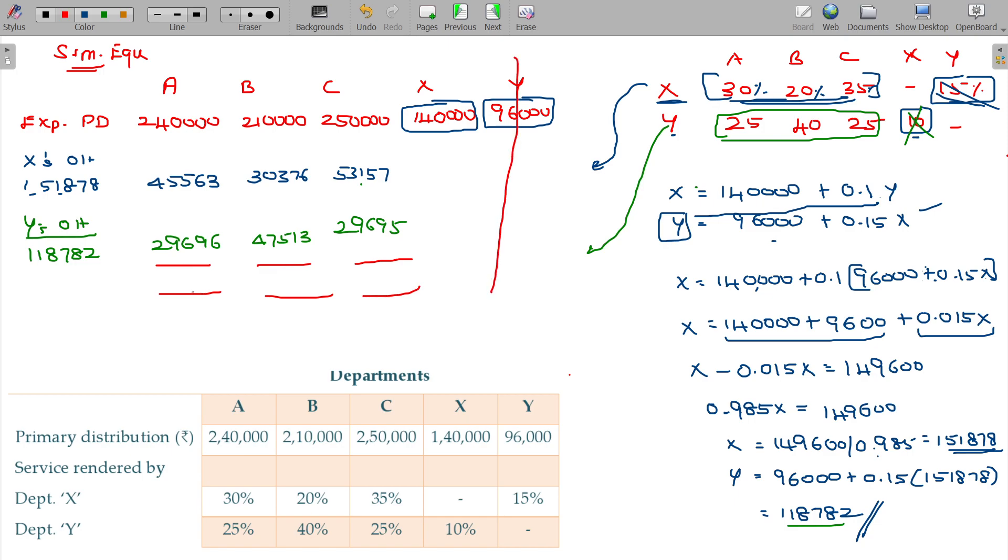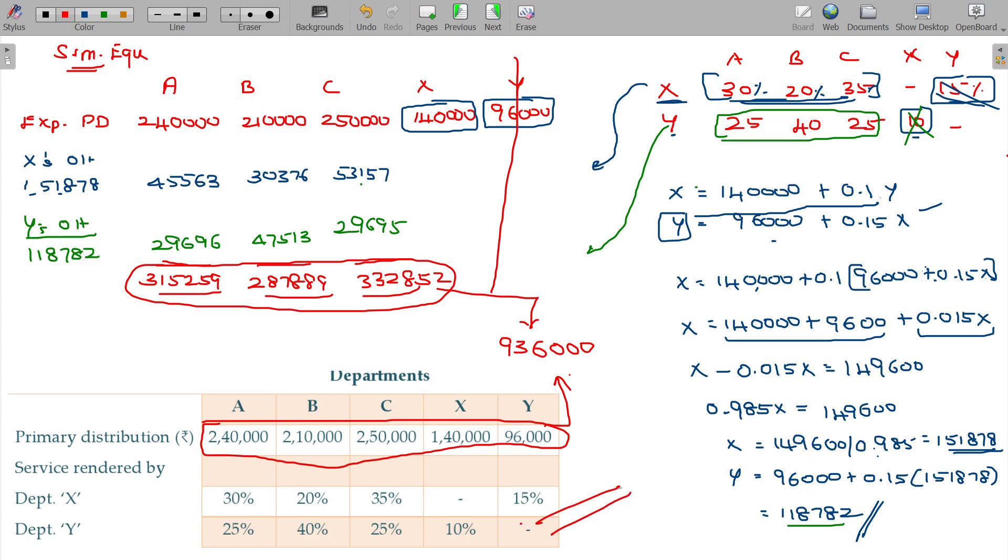Then the overhead after the secondary distribution for production departments only - service departments eliminated - A gets 315,259, B gets 287,889 and C gets 332,852. If you add these three, you will get 936,000, which is nothing but the five department overhead primary distribution. This is simultaneous equation method.